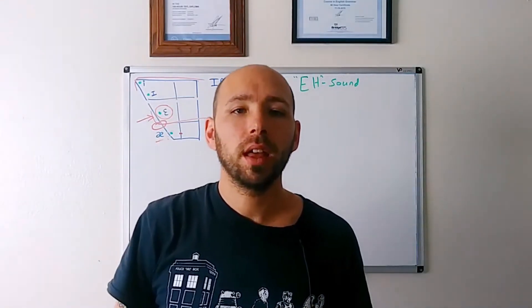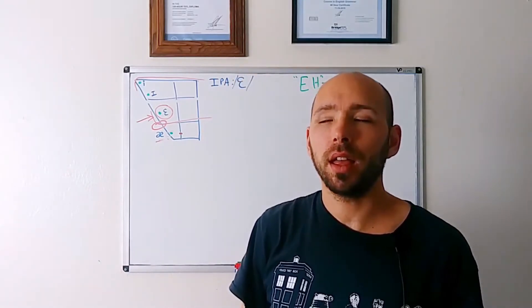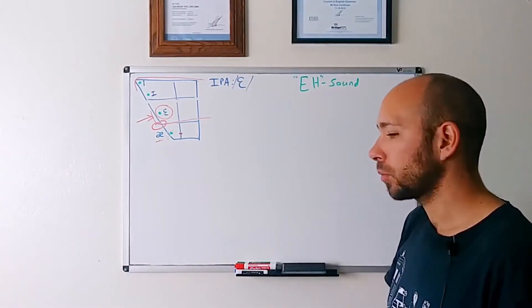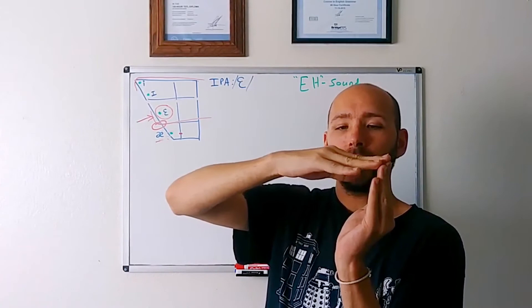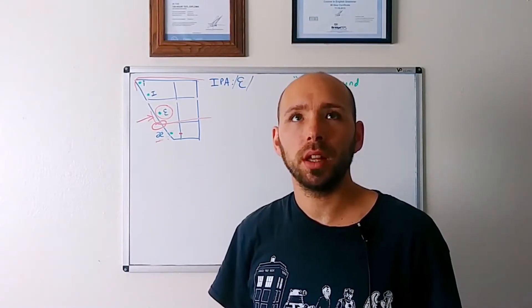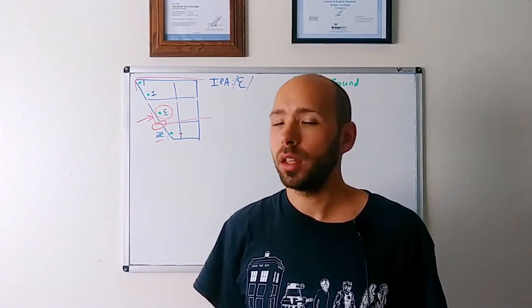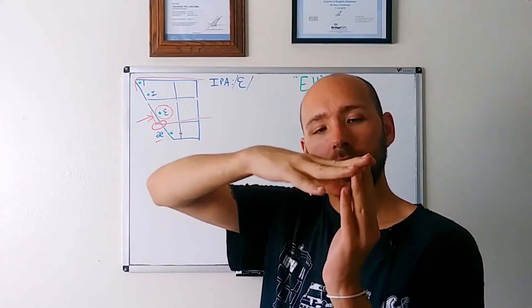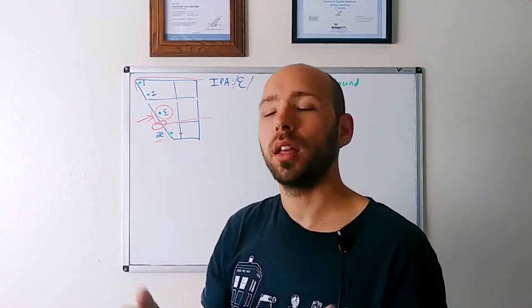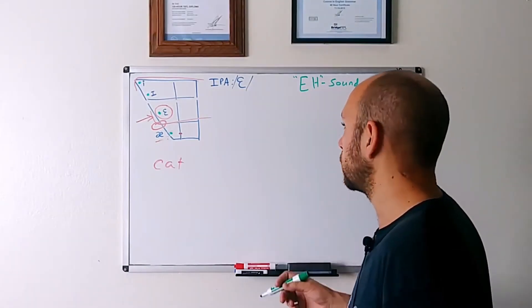It's just sort of, you just open your mouth halfway, halfway down, and then it just kind of sits there. EH, EH. Make sure your tongue isn't sort of like sticking up or anything, because then you'll get like EH. We don't want that. Just kind of nice and relaxed. EH, EH. So if we look at some example words,